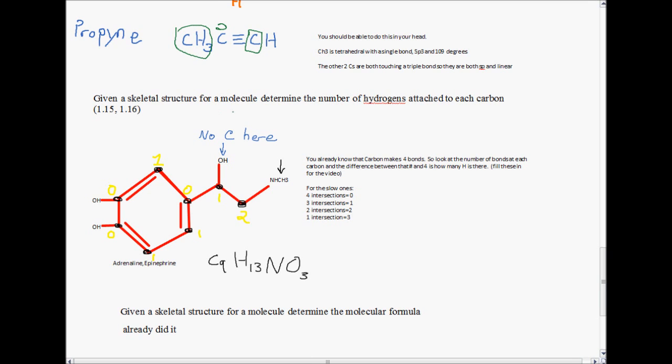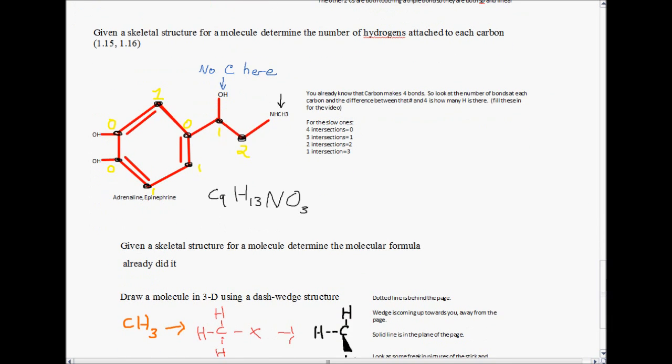Moving on. Given a skeletal structure for a molecule, determine the number of hydrogens attached to each carbon. This is called a skeletal structure. On here, each line represents a bond, and at the end of each line represents a carbon. If at the end of a line, you see a group, like this says OH right here, and this says NHCH3. If there's a group at the end of a line, there is no carbon there. So, there's no carbon here. Line is a bond. Where the lines intersect, those are carbons, which I colored in with little black dots. If there's a second line in the middle, that's a double bond. And that's really all you need to know for skeletal structures.